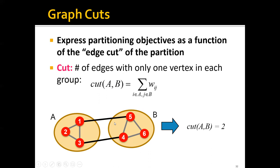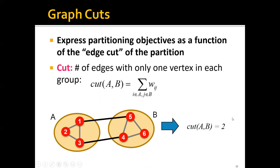since only these two black edges have one vertex in one group and the other vertex in the other group, the cut of this partitioning is actually equal to two.